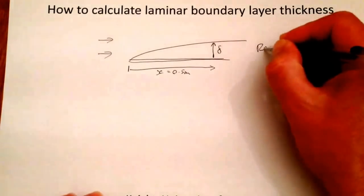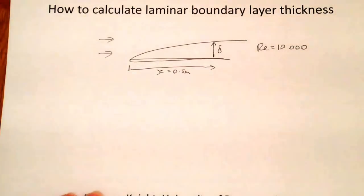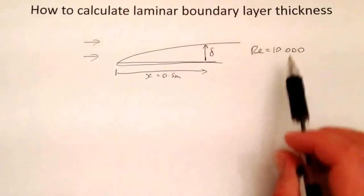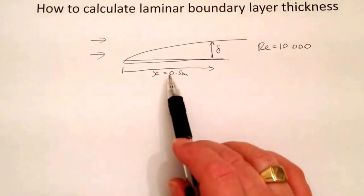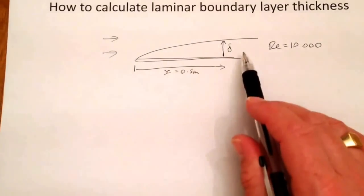Let's assume that we have a Reynolds number of 10,000. And there is a separate clip to show you how to calculate the Reynolds number. So these are the conditions that we are going to work out what the boundary layer thickness is.